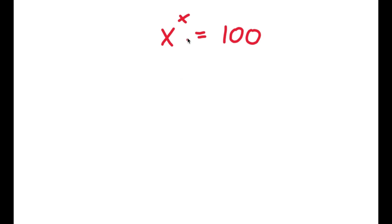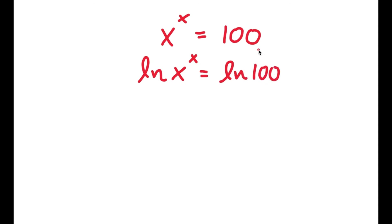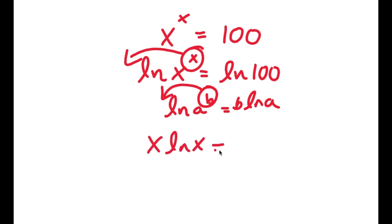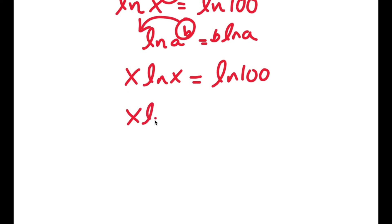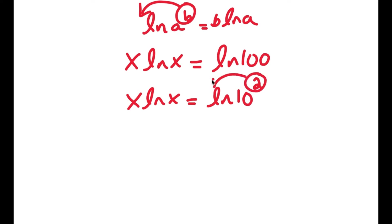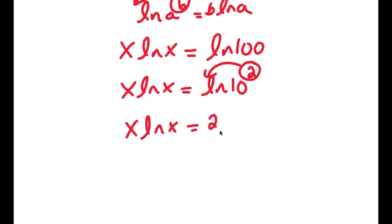In this problem, I have x to the power of x is equal to 100. I'll take the natural log on both sides: ln of x to the power of x equals ln 100. Using the log power rule, this becomes x times ln x equals ln 100. Since 100 is 10 squared, ln 100 equals ln 10 squared equals 2 times ln 10. So x times ln x equals 2 times ln 10.